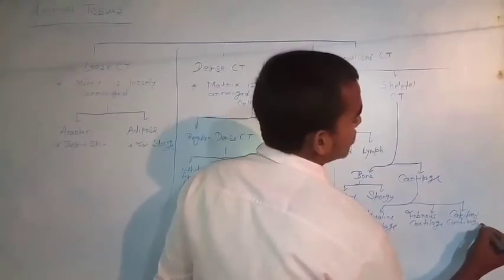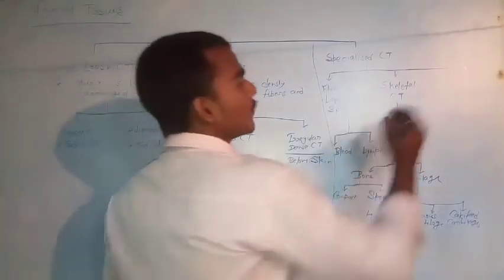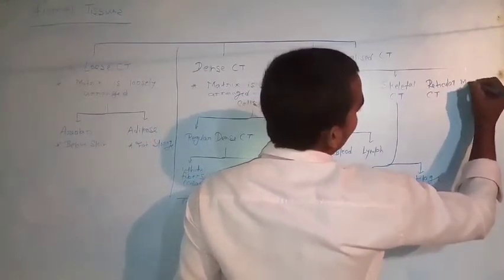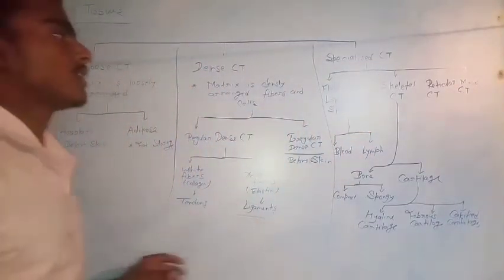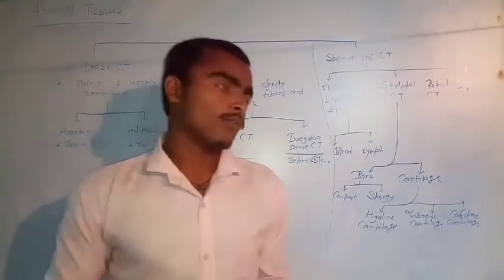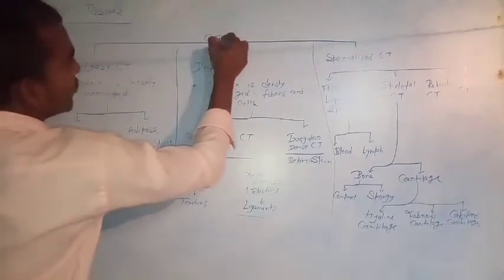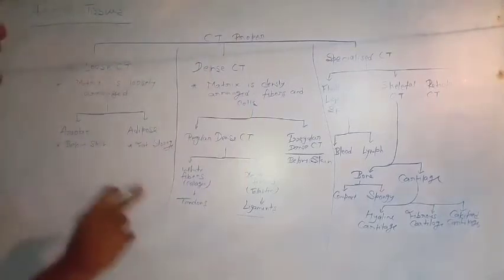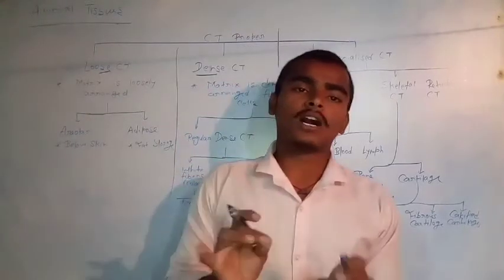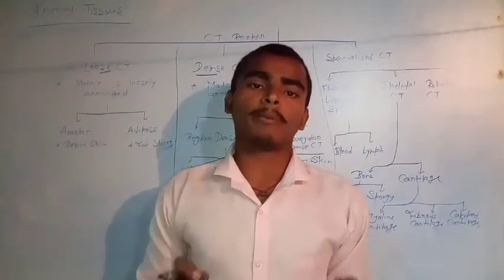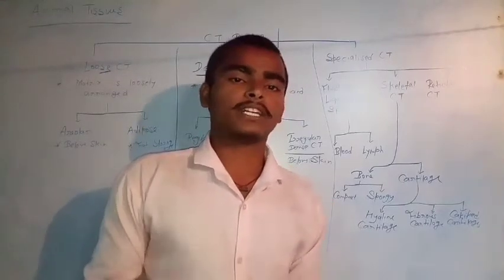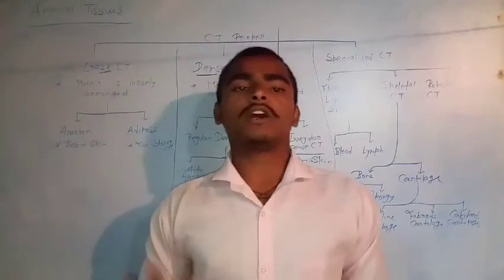Apart from fluid and skeletal specialized connective tissues, there are also reticular connective tissue and mycoid connective tissue. Additionally, the term 'connective tissue proper' covers both loose and dense connective tissues, while specialized connective tissues form a completely separate category. This is the complete detailed classification of connective tissues.